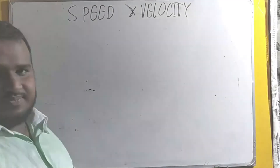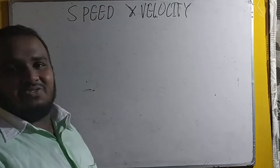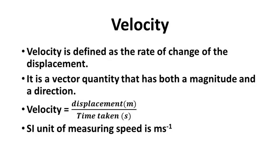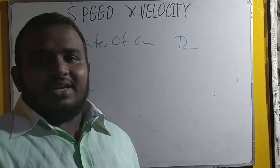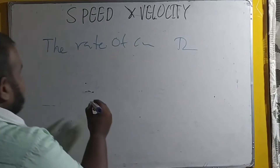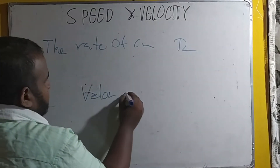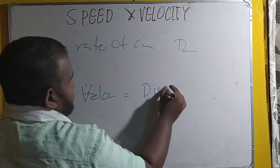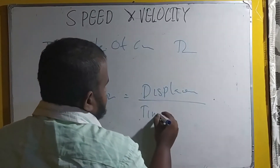What is velocity? Velocity means the rate of change of displacement. Whenever you find the rate, what you are finding is for one unit, what is the change? Displacement and distance are two different things. However, displacement divided by time taken is the equation for velocity. So velocity is equal to displacement divided by time taken.